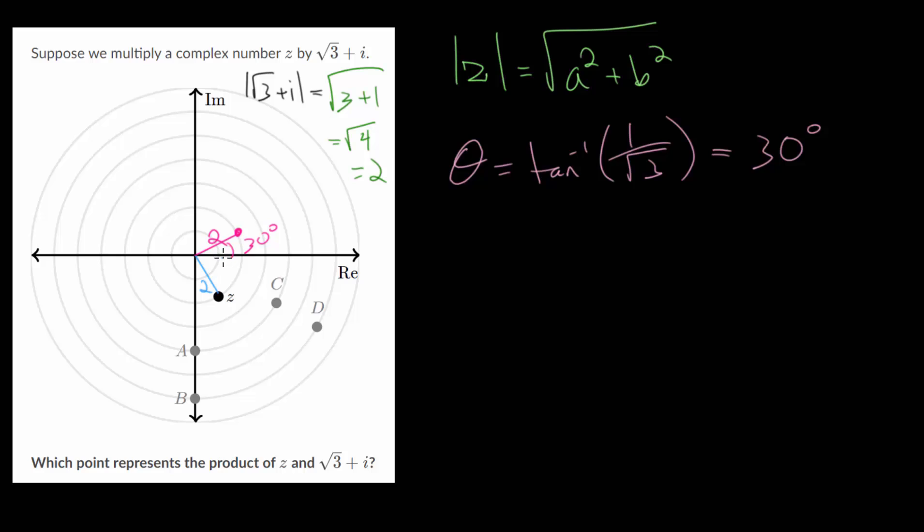We'll approximate. It looks like this is about negative 60 degrees, or right about there. And remember, when multiplying two complex numbers graphically, we will multiply their magnitudes.